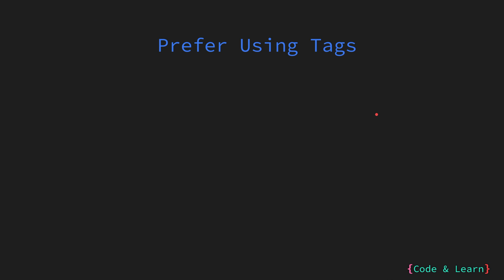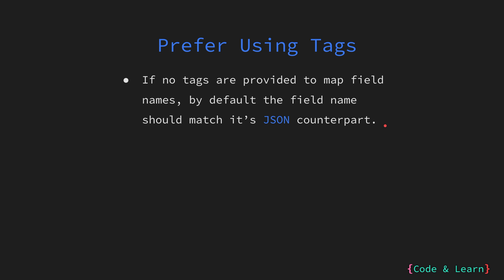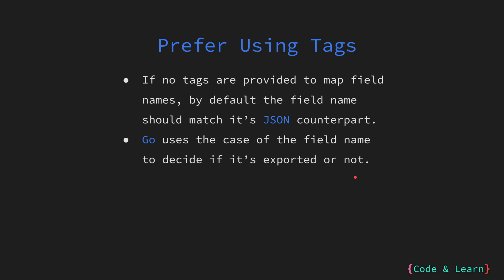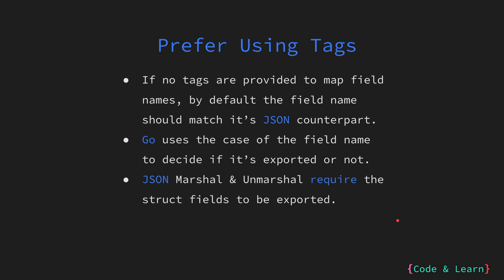There are some other reasons why JSON tags are highly recommended. By default, field names in a Go struct must match exactly with the JSON keys or field names in the JSON object, and the mapping is case sensitive. Go uses cases to determine if an entity is exported or not from the package it is defined in. If the field name starts with an uppercase letter, it is exported; otherwise it is unexported. JSON marshalling and unmarshalling through marshal and unmarshal functions require the fields inside the struct to be exported, which may not match with the field name of your JSON data object. So it's highly recommended to always use JSON tags for clarity.